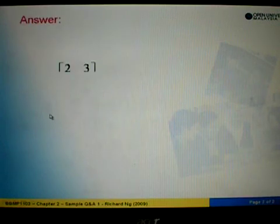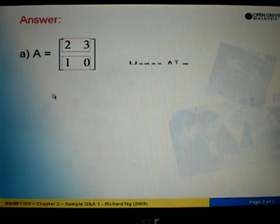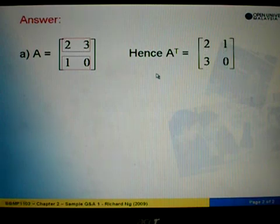Look at example A. We are given A equals to 2, 3, 1, 0. So the elements in the row are 2, 3, and 1, 0. To transpose A, when we carry out transposition of matrix A, what we need to do is convert the elements in row to columns. So 2, 3, and then 1, 0, we write as column 1, 0. That will be the answer for transposition of A.